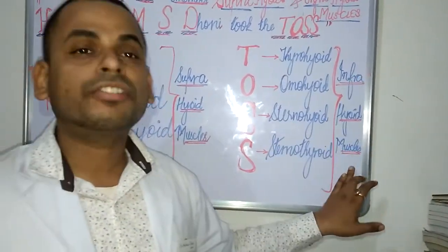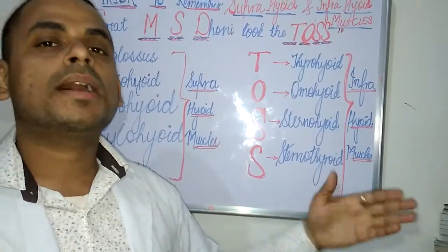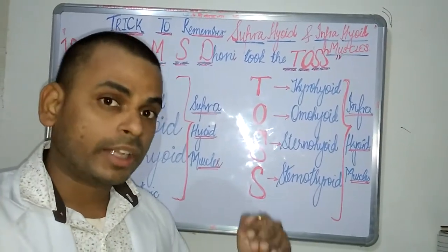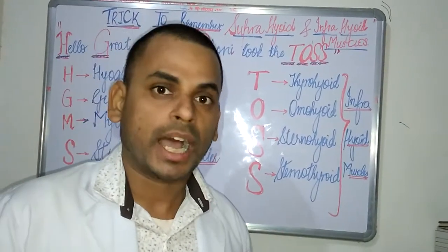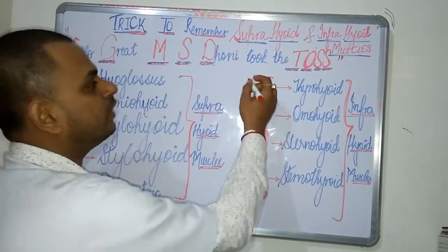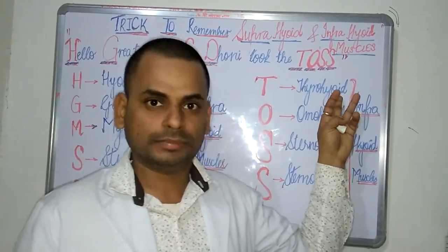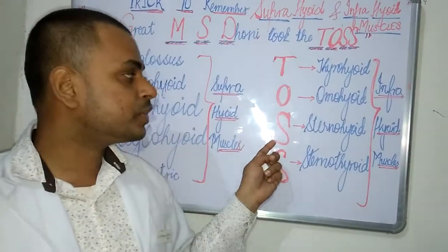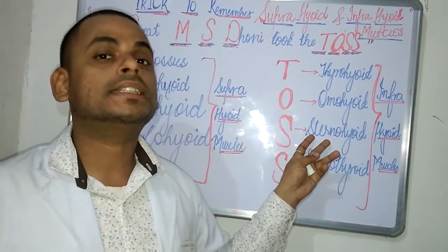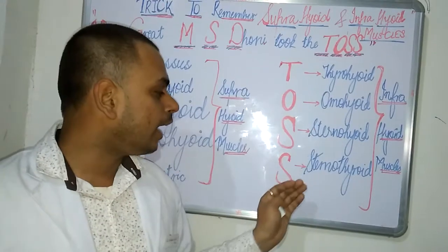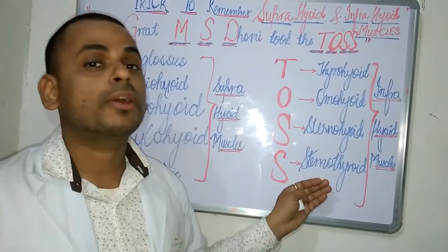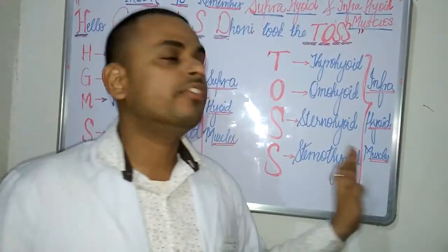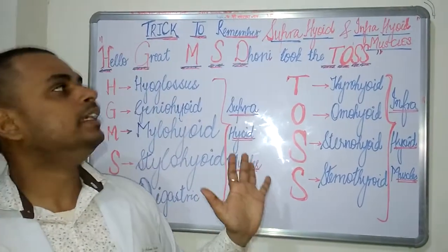Now, 'Took The Toss' — every alphabet refers to the infrahyoid muscles, which lie below the hyoid bone, originating below it and inserting into the hyoid bone. T refers to the thyrohyoid muscle, O refers to the omohyoid muscle, the first S refers to the sternohyoid — from the sternum to the hyoid bone — and the second S refers to the sternothyroid, from the sternum to the thyroid gland.